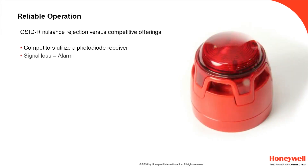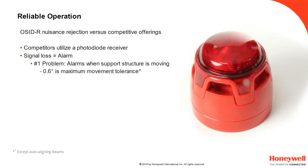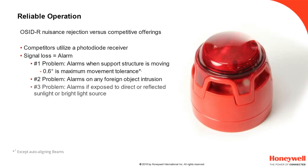The photo diode used by the competition will false alarm when building movement exceeds a small tolerance. It will alarm if any foreign object interferes with the beam, and it will alarm when bright sunlight or reflections hit the beam or reflector.